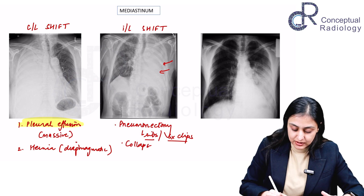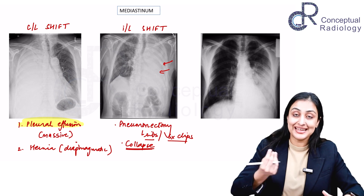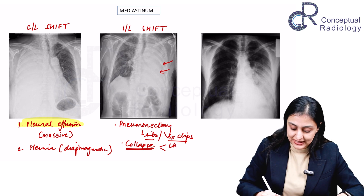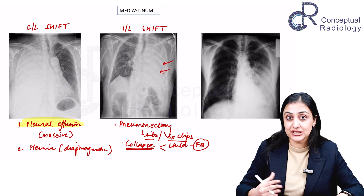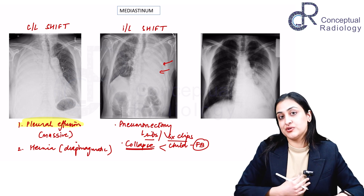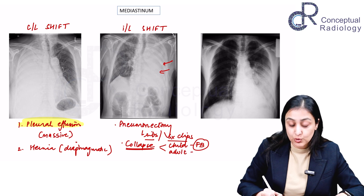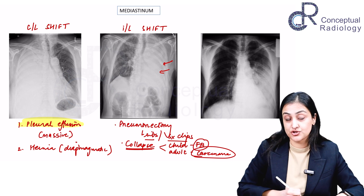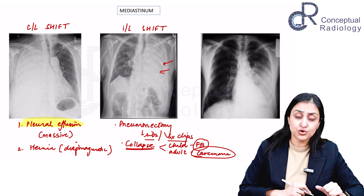If pneumonectomy is not the case, consider a total collapsed lung, which occurs when the main bronchus is obstructed. The two most common causes: in a child with acute respiratory distress, rule out a foreign body aspiration obstructing the main bronchus. In an elderly male smoker, rule out malignancy — a complete endobronchial obstruction by carcinoma of the lung resulting in total collapse.